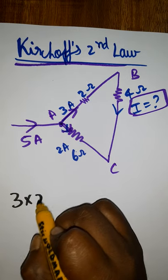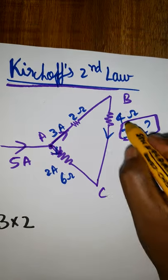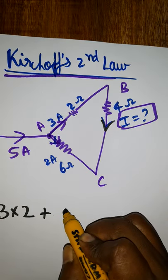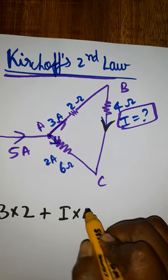AB 3 ampere is current, 2 ohms is the resistance. This is the voltage. BC, it is the same direction, positive, I can take it I current with 4 ohms.